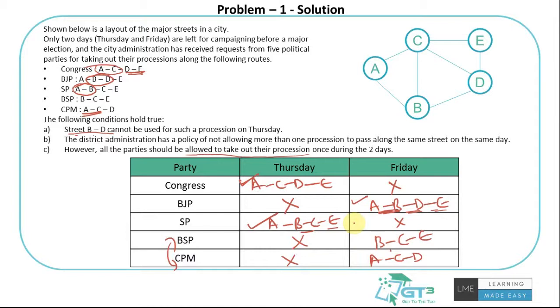This is the final schedule where I'm agreeing with all the given conditions. All the parties are getting to do the procession once. There is only one possible case, which is this. I cannot schedule this in any other way. Based on the given conditions, we have no other choice but to do it only in this way.